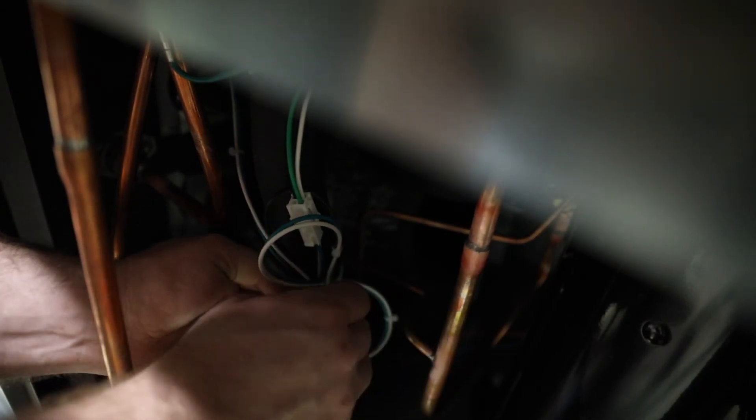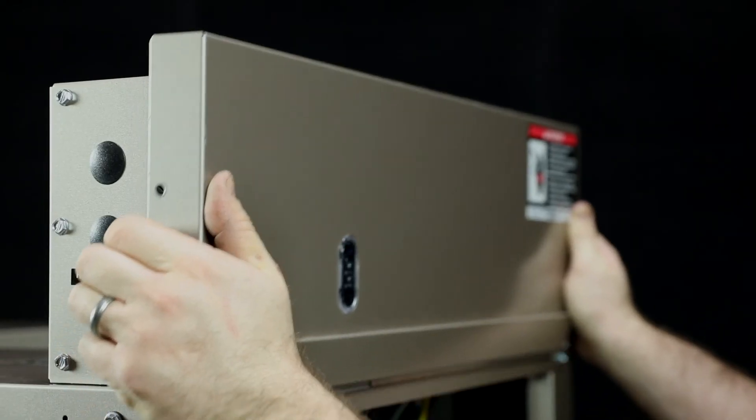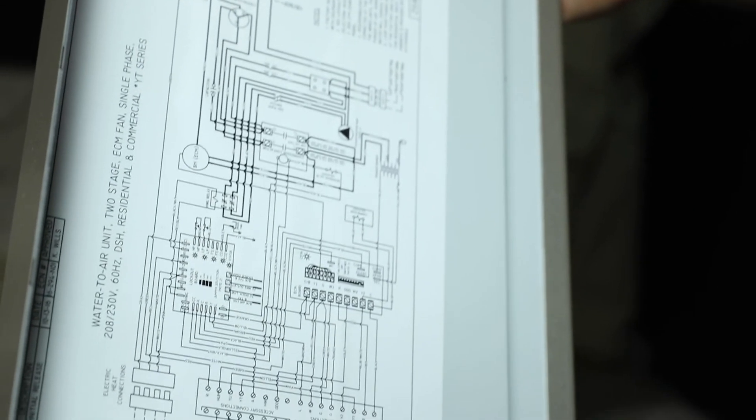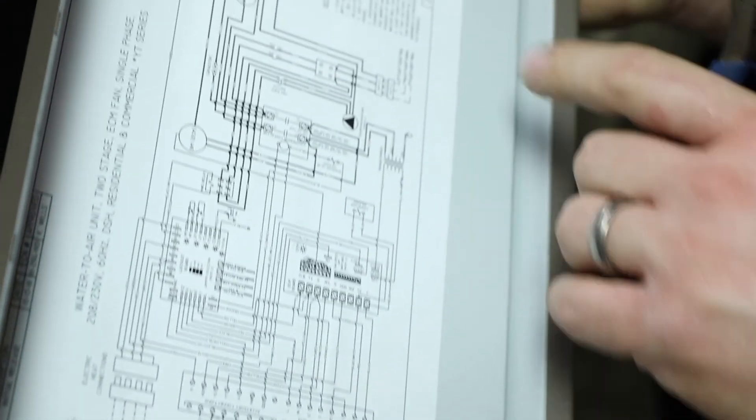We recommend using zip ties and attaching any excess wire to tubing insulation. Secure wires so they do not come in contact with any copper tubing. Complete the wiring connection in the control box using the wiring diagram inside the control box cover as needed. Pumps must never run dry. Do not power pumps until flushing and purging is completed.